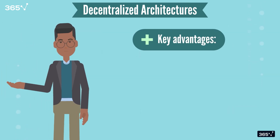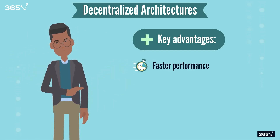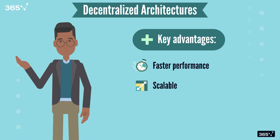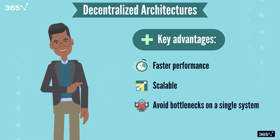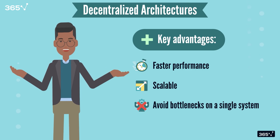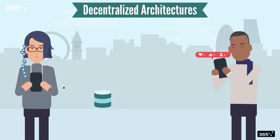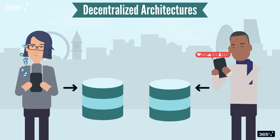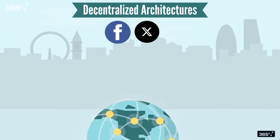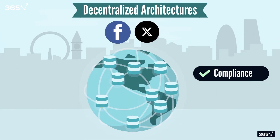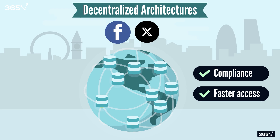Decentralized architectures enable faster performance because data is now stored closer to the users who need it. Most importantly, they avoid bottlenecks on a single system because all the read and write loads can now be distributed across different instances of the system. A great example was when social media applications like Facebook and X first came out. They were required to store personal user data in compliance with local and state laws depending on where the user lives, so they managed data centers in several parts of the world, keeping user data compliant and enabling faster access as data is always physically closer to the user.